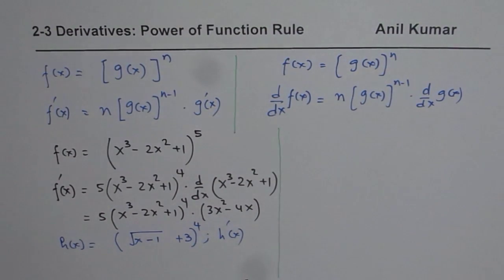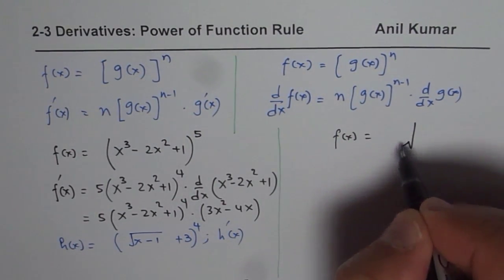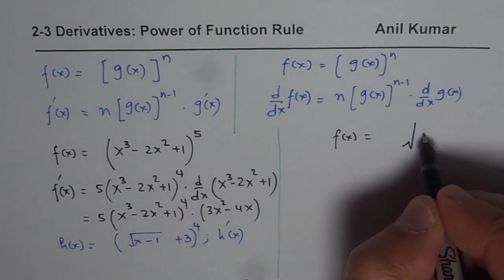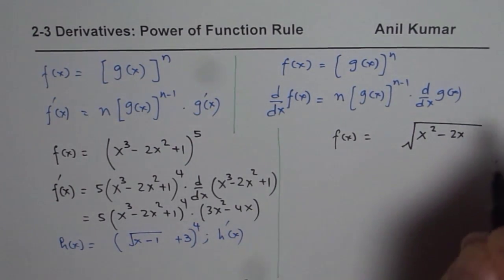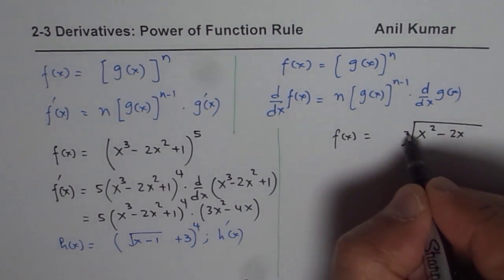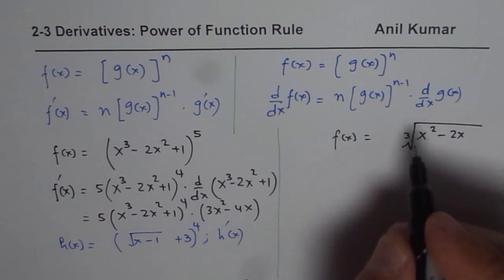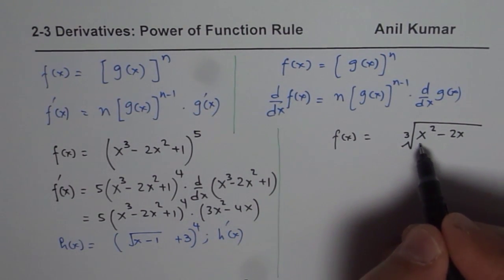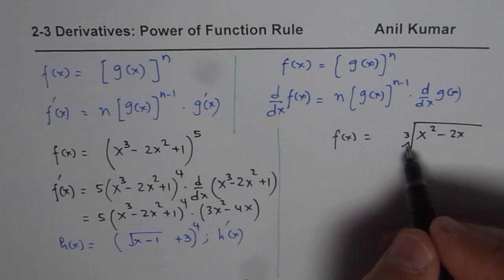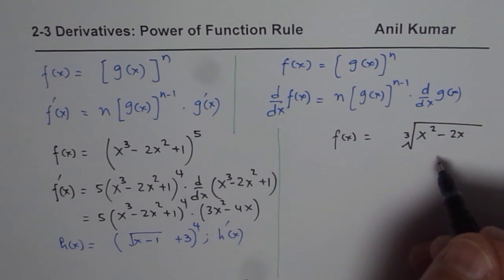This time I will take up a function f of x equals to the cube root of x squared minus 2x. So let us say this is our function, and we need to find the derivative of this function. You could also think of it as two functions combined: the inside function is x squared minus 2x, and the outside function is the cube root of that. So that helps to understand the concept.